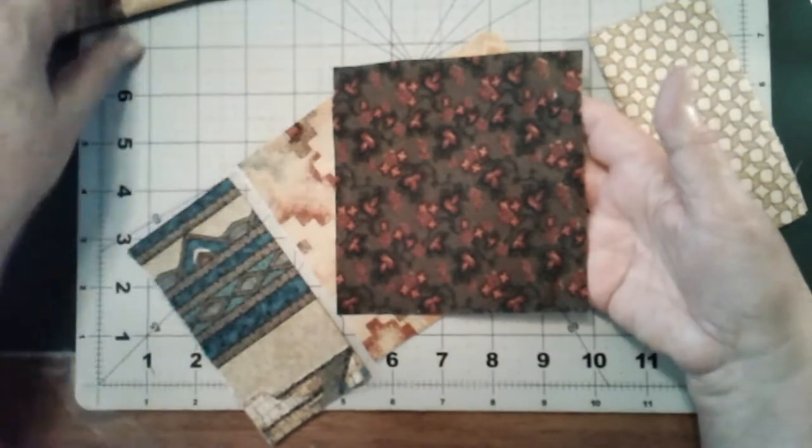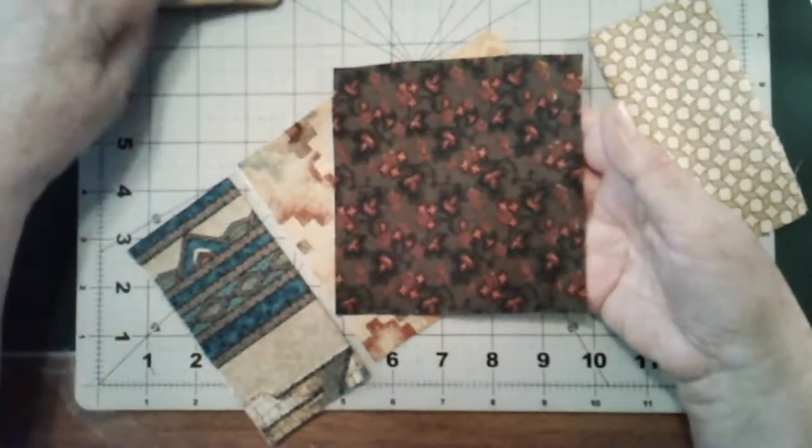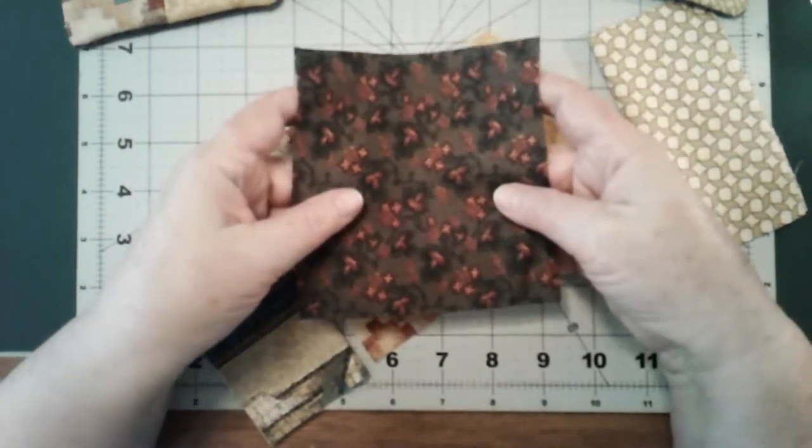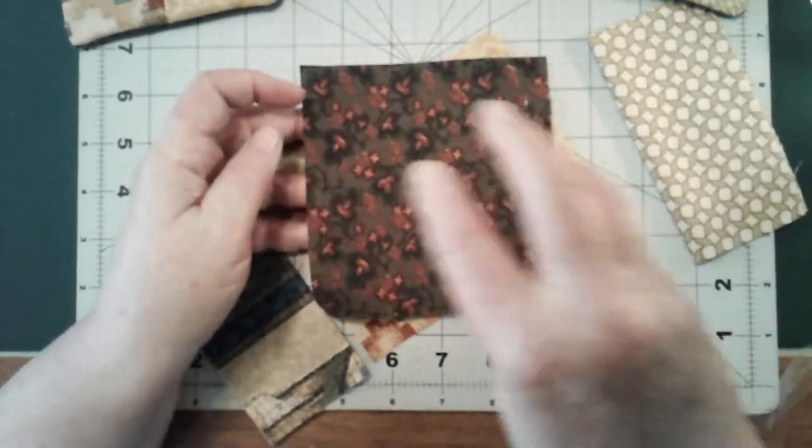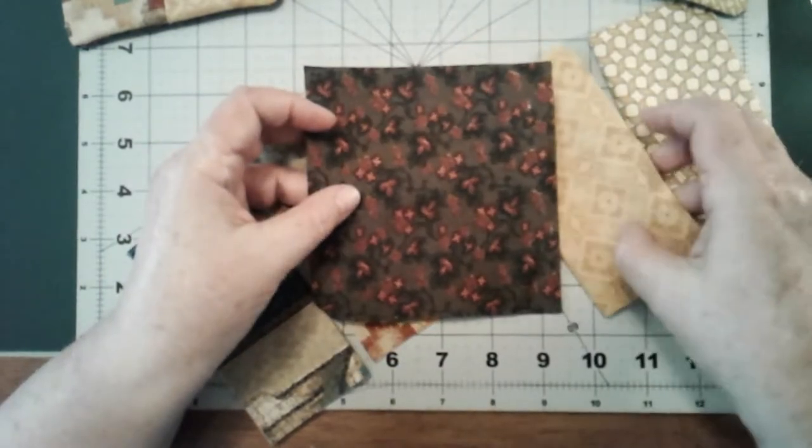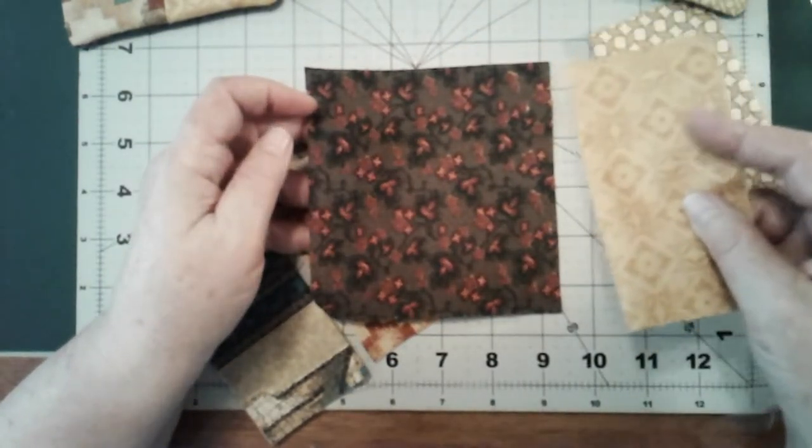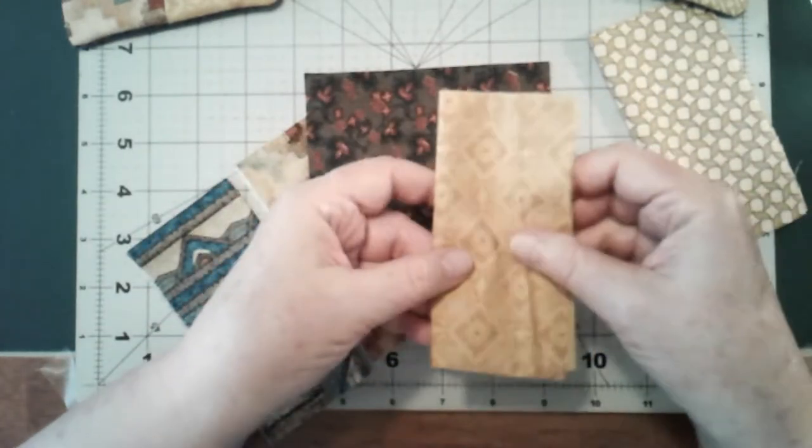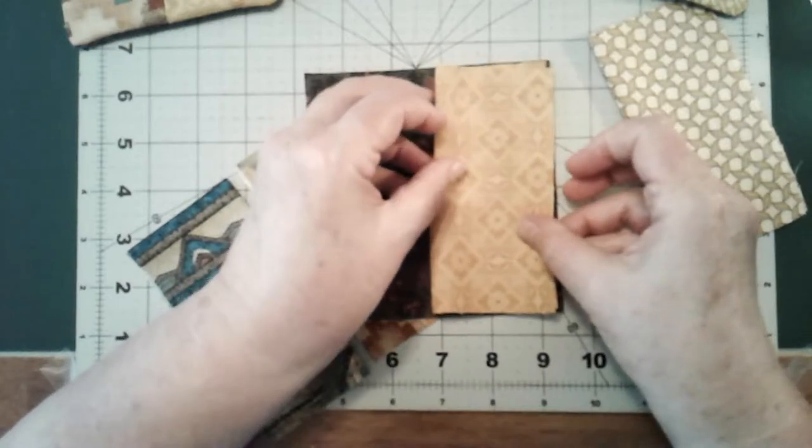One of them you're going to choose for the base. This one is the base. Remember, pretty sides go together and you are going to sew on the wrong side. So on this one it's folded, so they're both pretty sides.